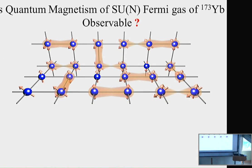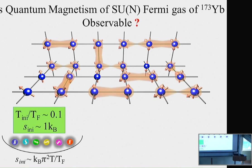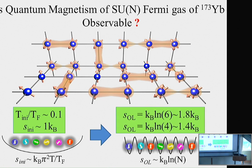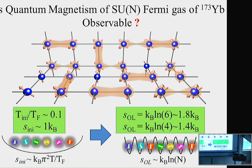One may wonder whether it is really possible to observe the quantum magnetism of SUN Fermi gases with currently achievable atom temperatures. Our lowest atom temperature in a harmonic trap is about 10% of the Fermi temperature, corresponding to an entropy per particle of about 1 kB. This value is lower than the entropy of atoms in the optical lattice with a Mott insulator state with no spin correlation — about 1.8 kB for SU6 and 1.4 kB for SU4 — so we can expect the formation of some degree of spin correlation for these cases.